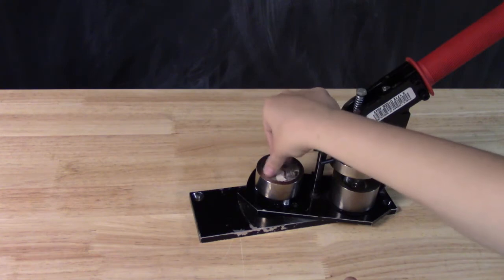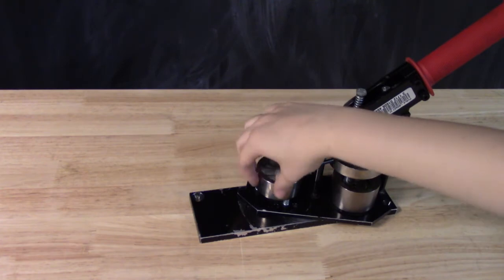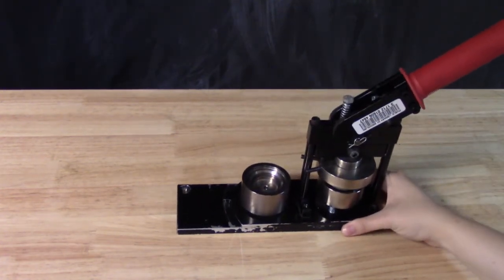Next, layer your paper cutout on top of the button front with the design facing up towards you, then put the clear plastic film circle on top of that. When your layers are all set, spin the full compartment so it's under the base of the lever.